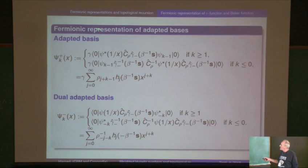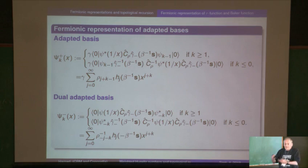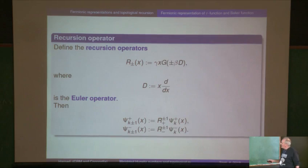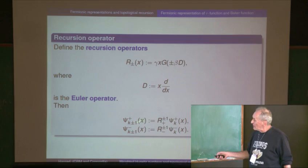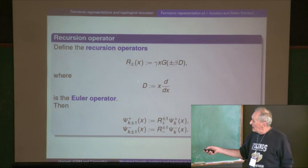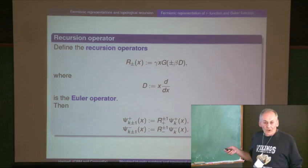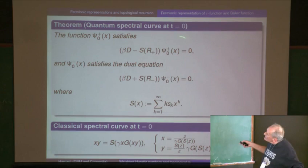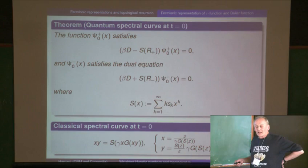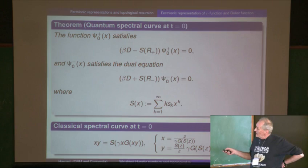There's a sequence of recursion operators that relate these basis states. The recursion operator is defined by evaluating the generating function for weights on the Euler operator x·d, where d is the Euler operator. When you see x appearing here, it's the inverse of the spectral parameter — 1/z is x — so you've got these recursion relations. This is the beginning of topological recursion. It's easy to see that the zeroth element, which is the same as the Baker function evaluated at t equal to zero, satisfies this differential equation.